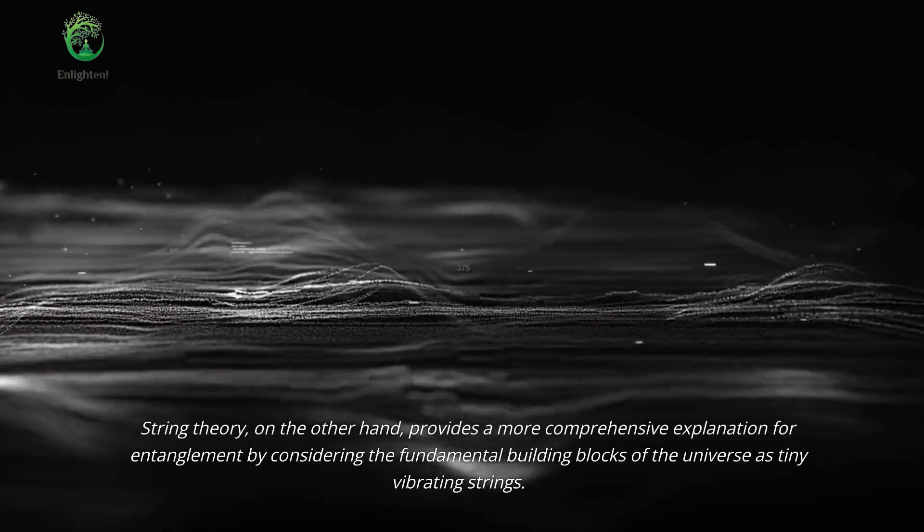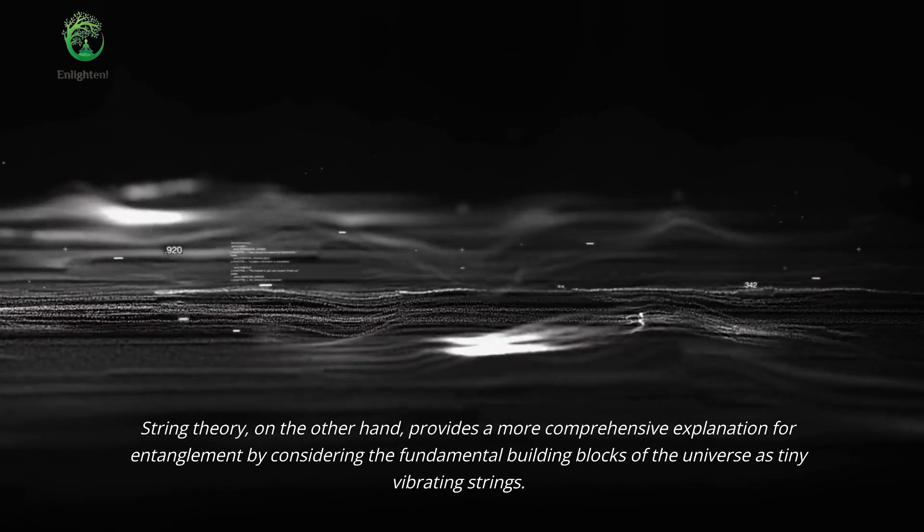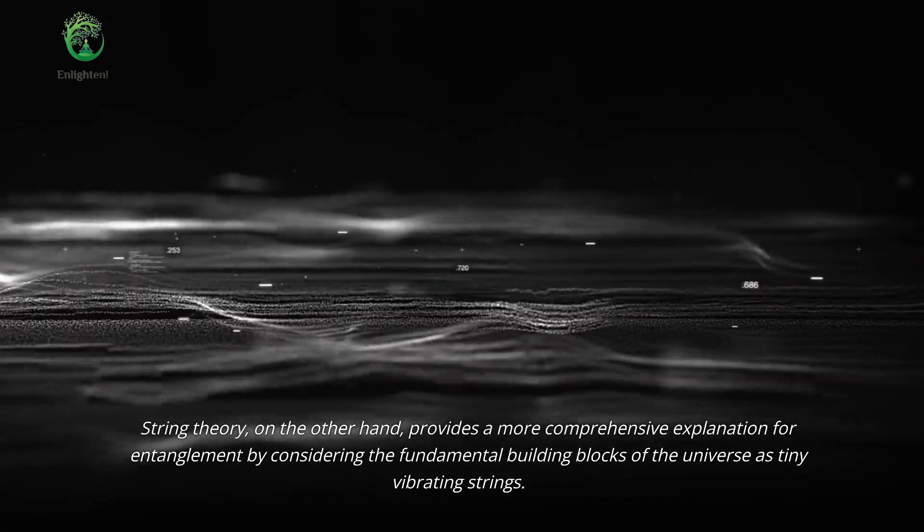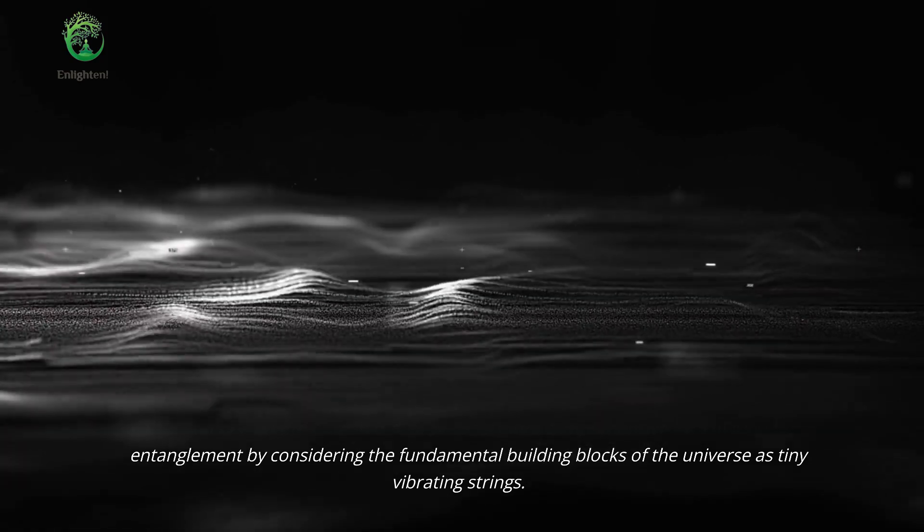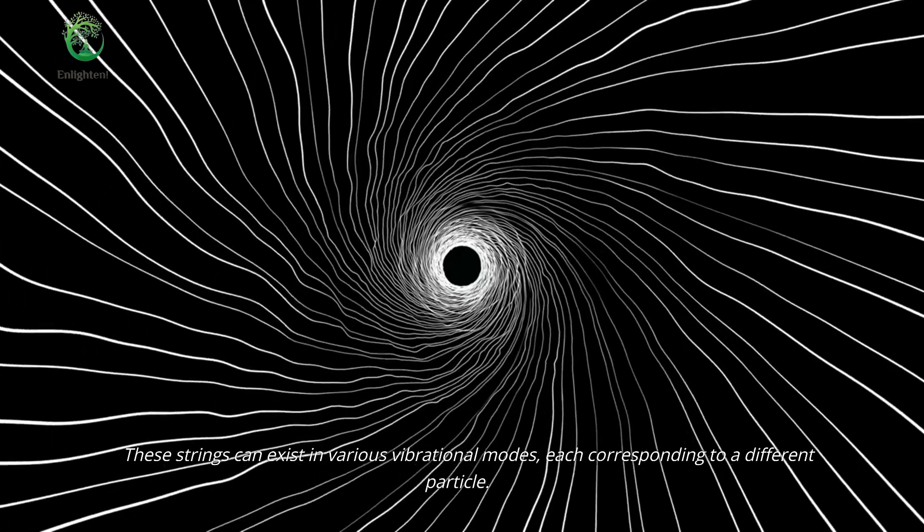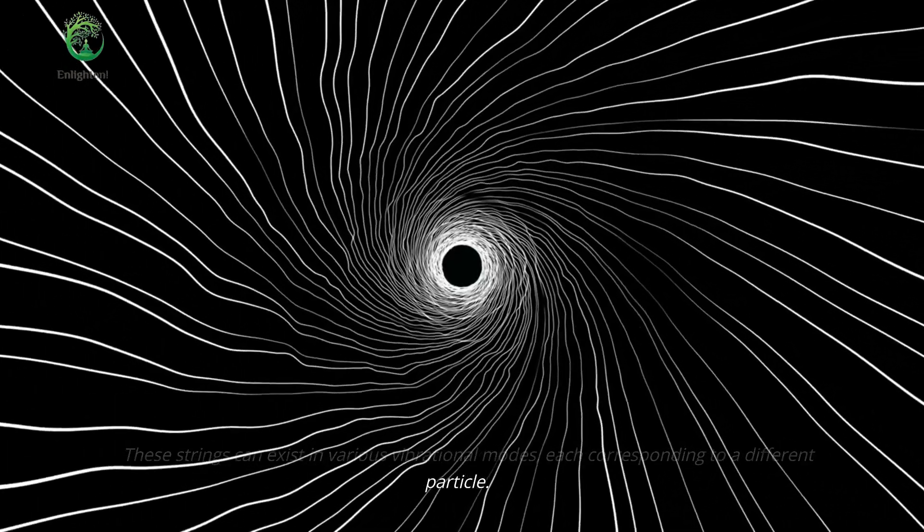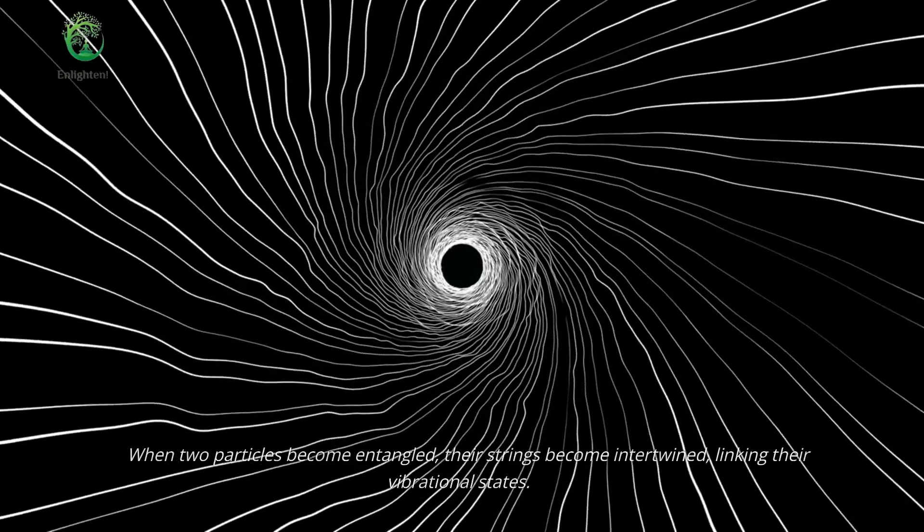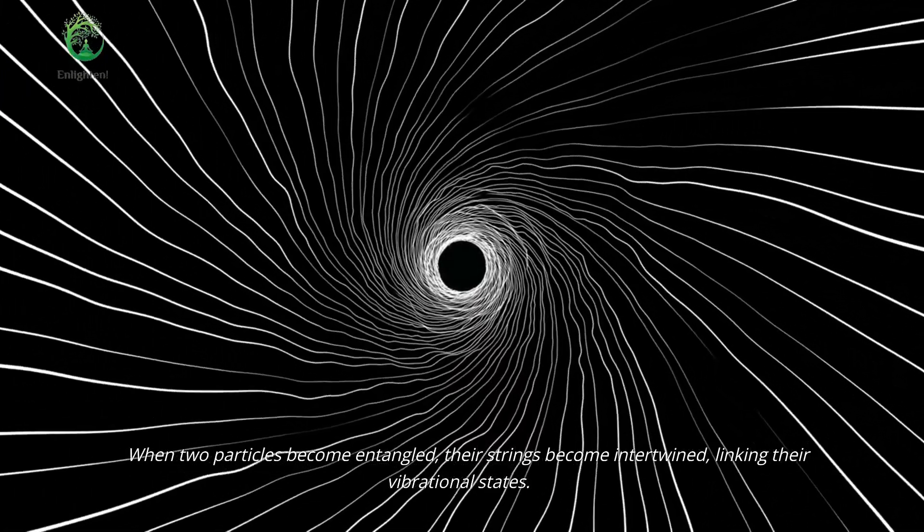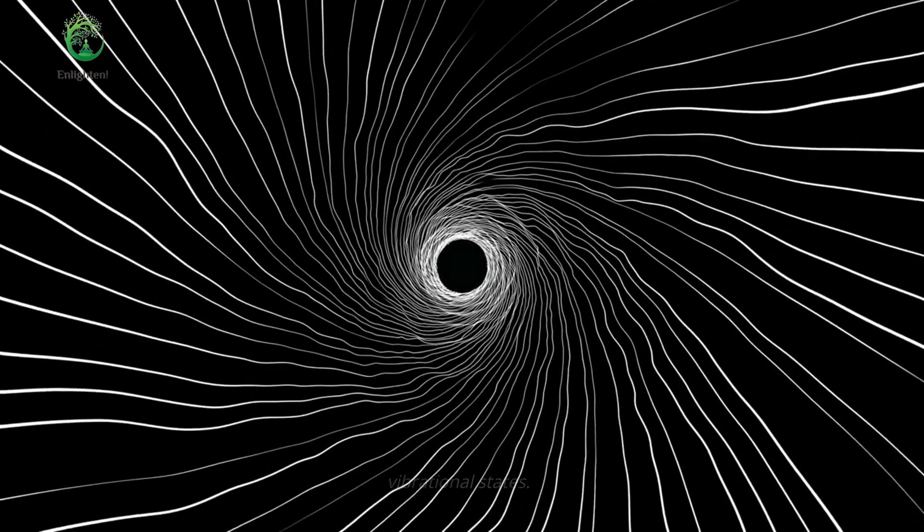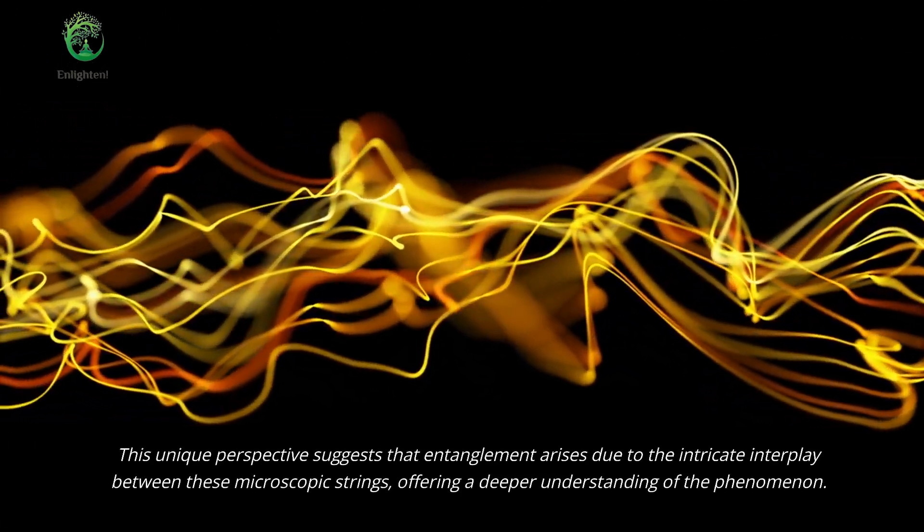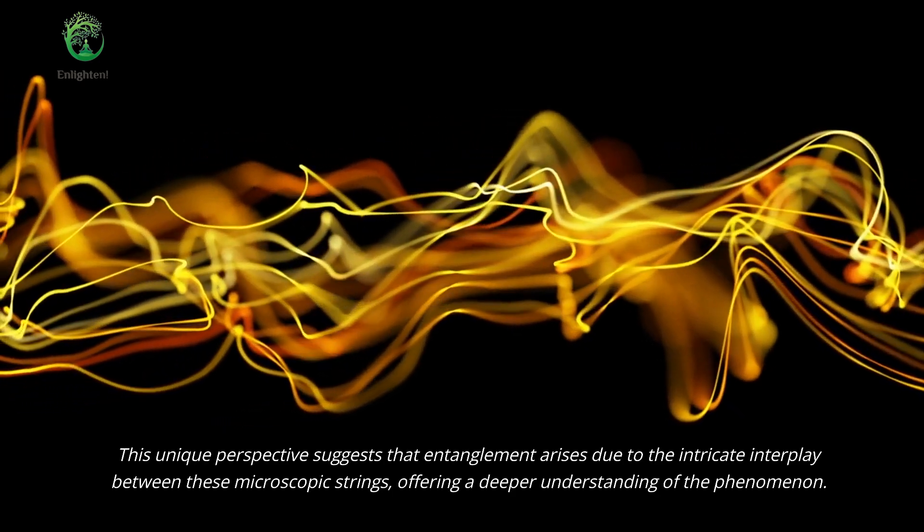String theory, on the other hand, provides a more comprehensive explanation for entanglement by considering the fundamental building blocks of the universe as tiny vibrating strings. These strings can exist in various vibrational modes, each corresponding to a different particle. When two particles become entangled, their strings become intertwined, linking their vibrational states.